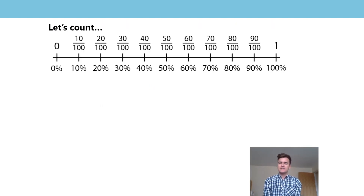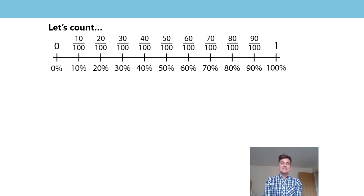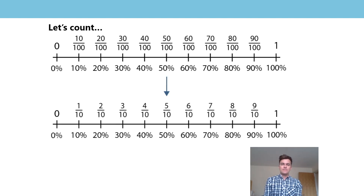Before I leave you with that task, let's do a little bit of counting and connecting percentages, decimals, and fractions. First, I'd just like you to count in hundredths from zero. Ready? Let's do that together. Zero, ten hundredths, twenty hundredths, thirty hundredths... sixty hundredths, seventy hundredths... one hundred hundredths. What did you say there at the end? One — or hundred hundredths, which of course is equivalent to one.